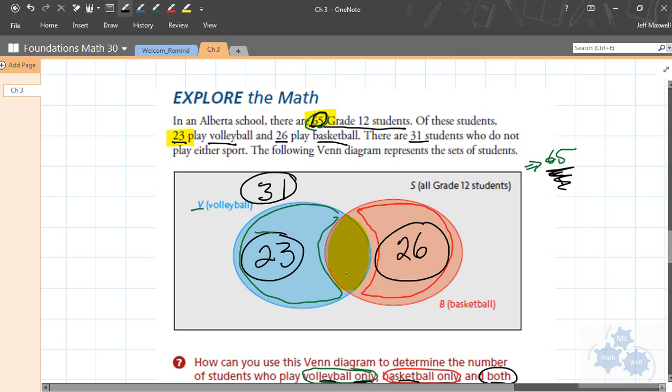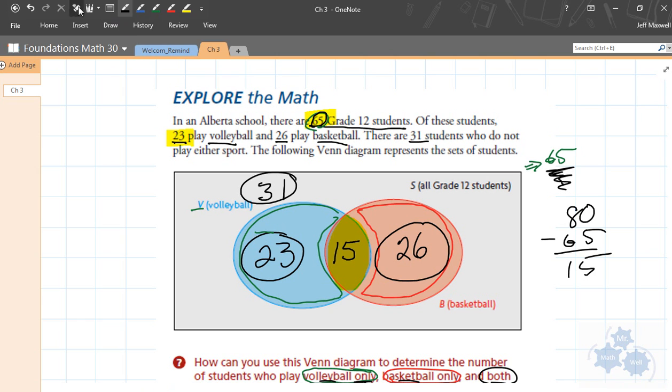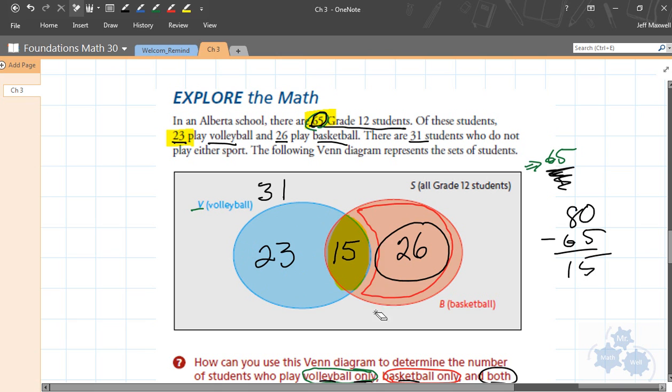When I asked the people who played volleyball, there were some people that put up their hand for volleyball, and they put up their hand for basketball. So I can't count them as separate people. We've double-counted them. So how many people have we double-counted? So if we add that up again, we've got 80 students here. And how many have we double-counted? 80 minus 65 is 15. So we've counted 15 people twice.